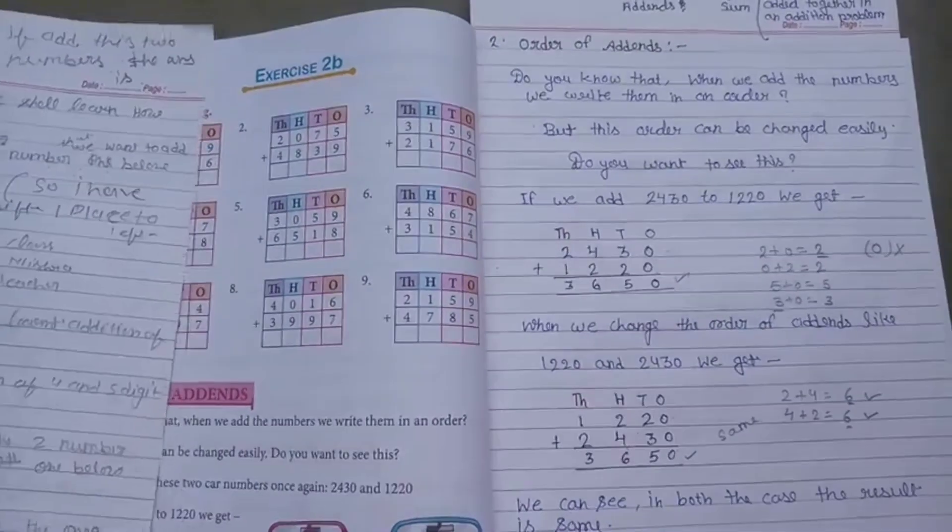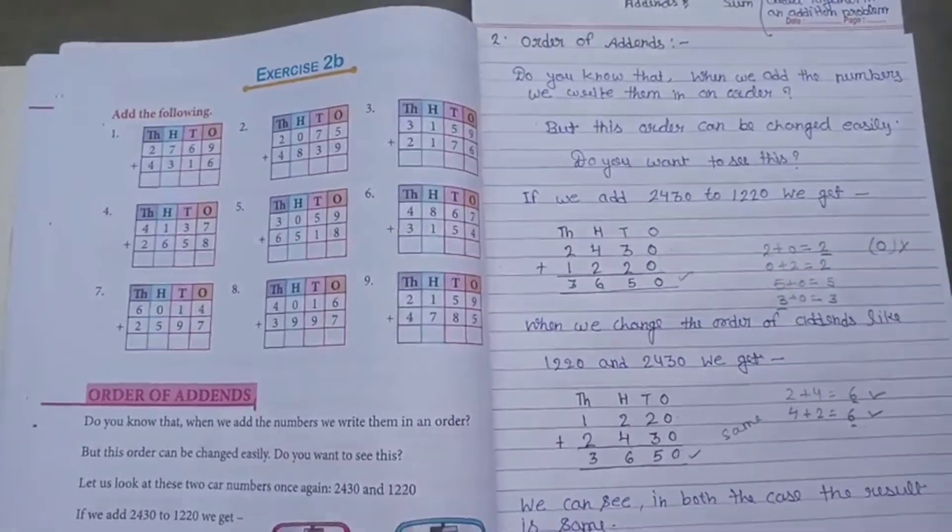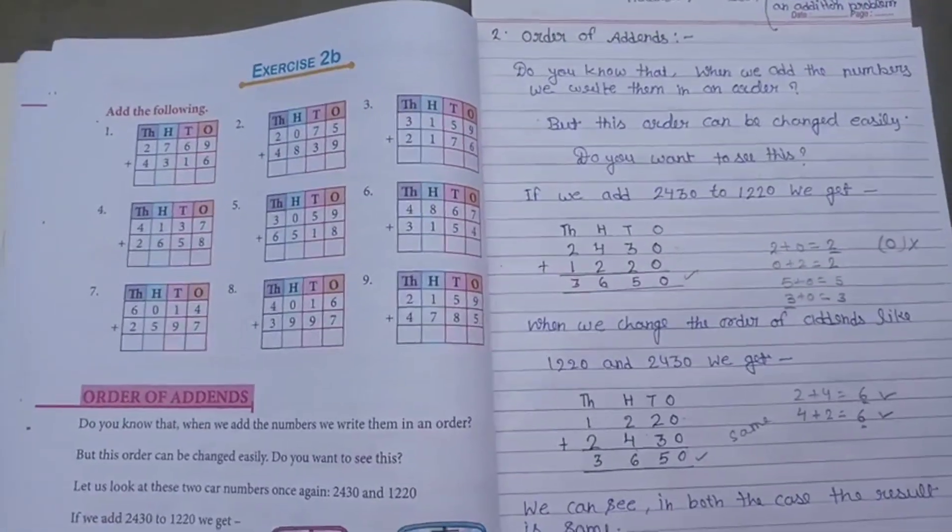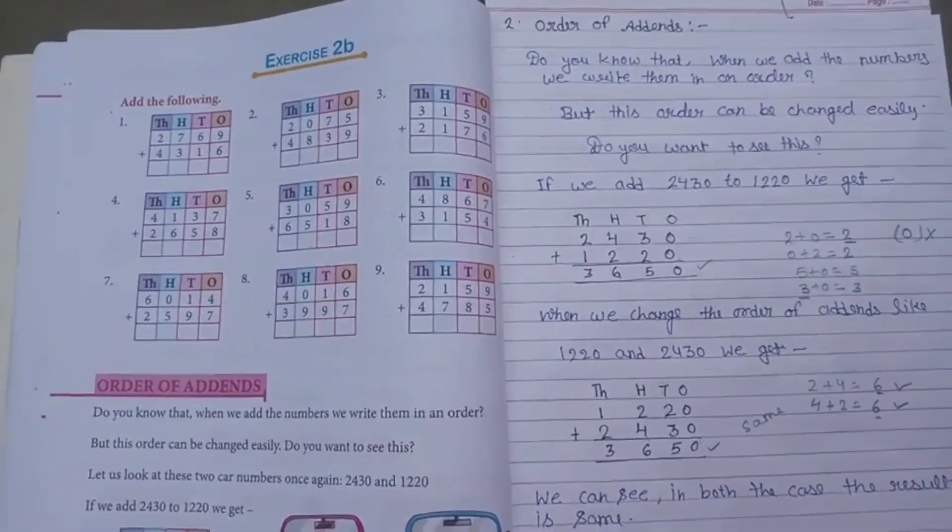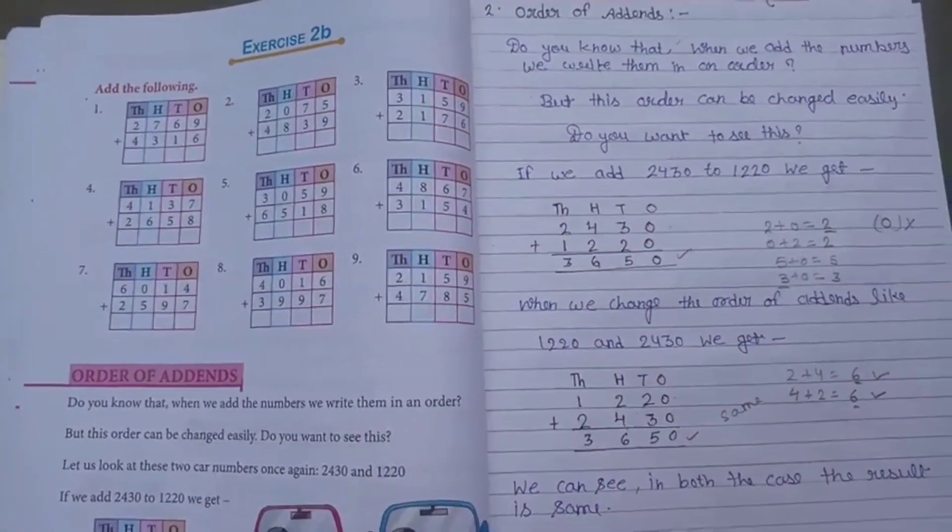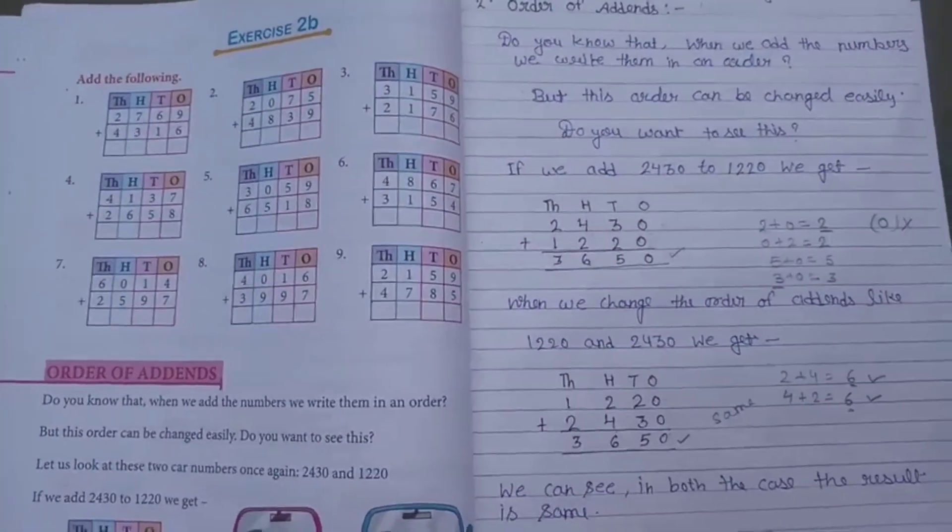First we add the ones, then tens, then hundreds, and finally thousands. 0 plus 0 is equal to 0, 3 plus 2 is equal to 5, 4 plus 2 is equal to 6, and 2 plus 1 is 3. This is 3650.